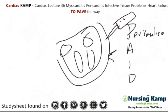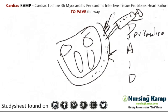Pericarditis can result from a previous MI or CABG surgery where the pericardium was entered and resulted in infection, or where fluid needed to be evaluated. Pericardiocentesis drains that fluid. Pericardial drains are also a risk factor for developing pericarditis.